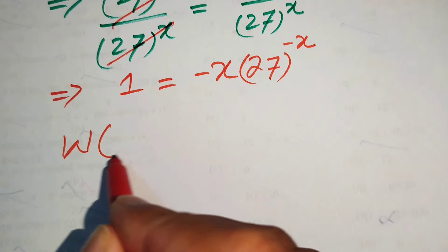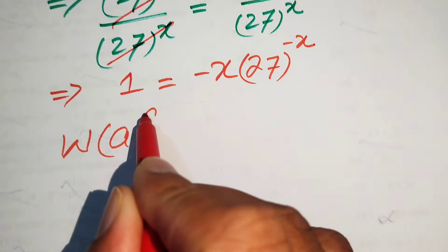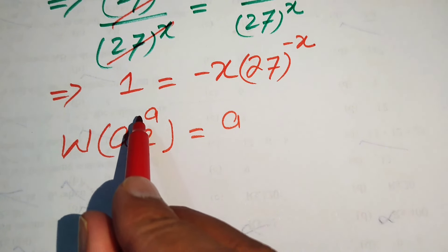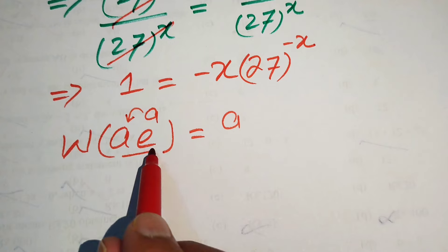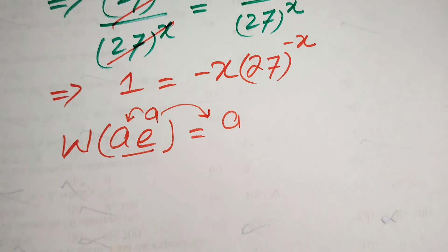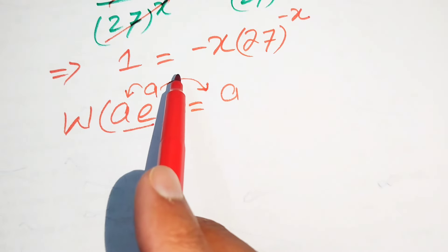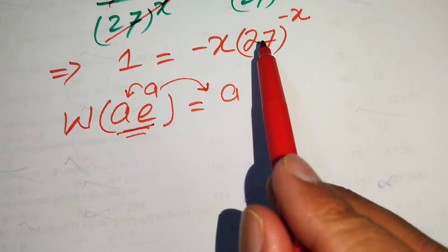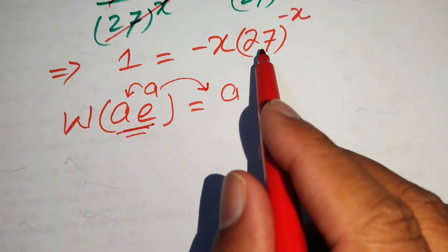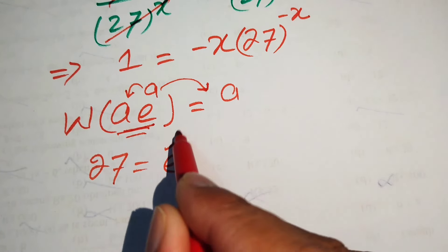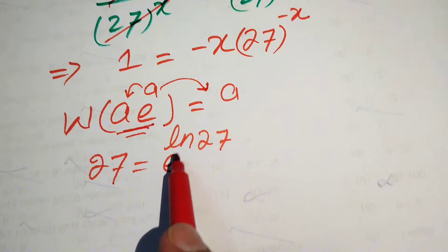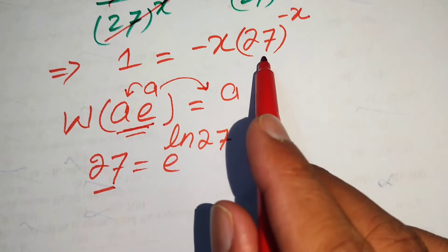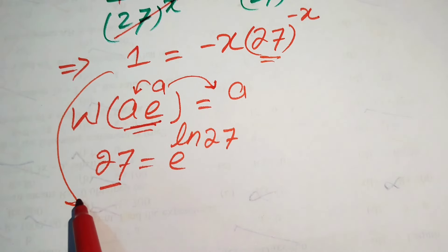In method 2 we use the Lambert W function. The standard form is: W of (a times e to the power of a) equals a — that is, if you have a base-e exponential whose exponent is multiplied by a term, applying W gives that term as output. We rewrite 27 as e to the power of log 27, since applying log and antilog simultaneously returns 27. We then apply this property to the equation.